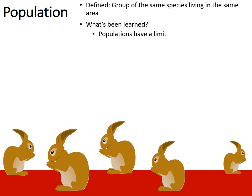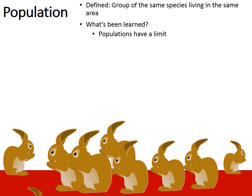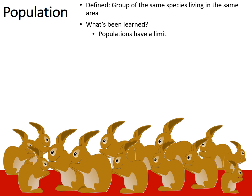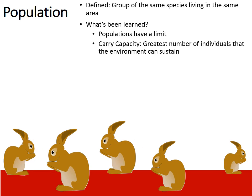Populations have a limit. You may have heard the expression that rabbits can reproduce like rabbits — they reproduce at an abundant rate. But nature limits the amount of reproduction that can occur. Populations typically have a carrying capacity: the greatest number of individuals that the environment can sustain. There are limiting factors that prevent the overpopulation of rabbits.